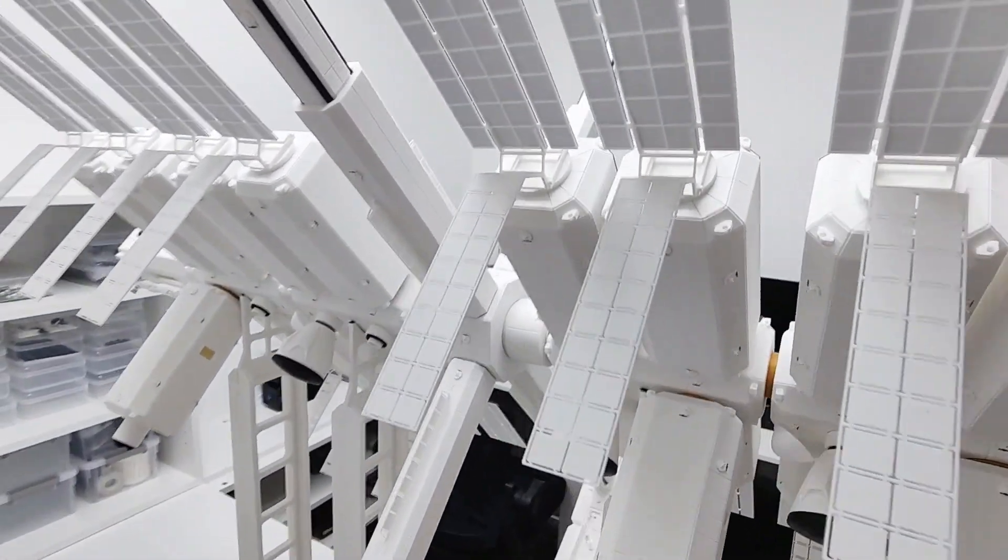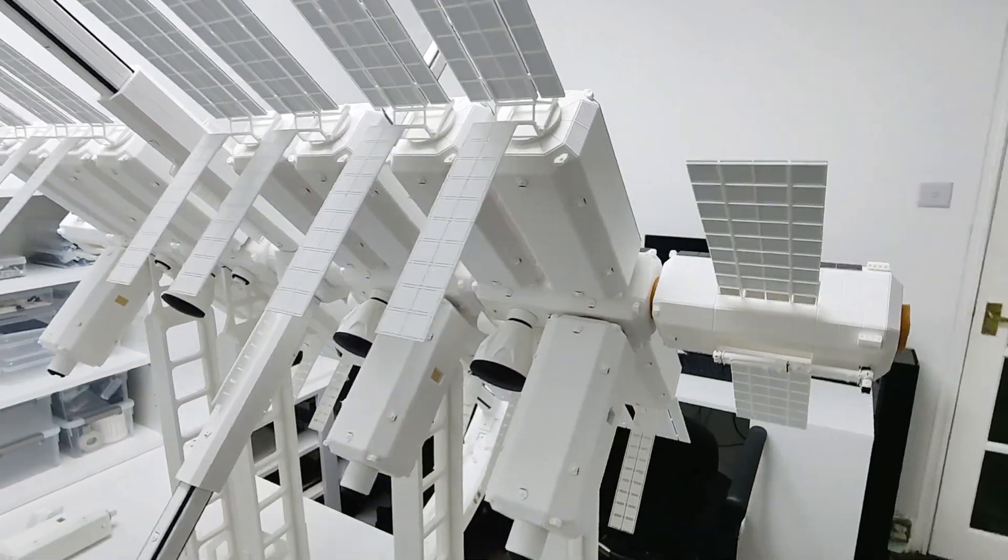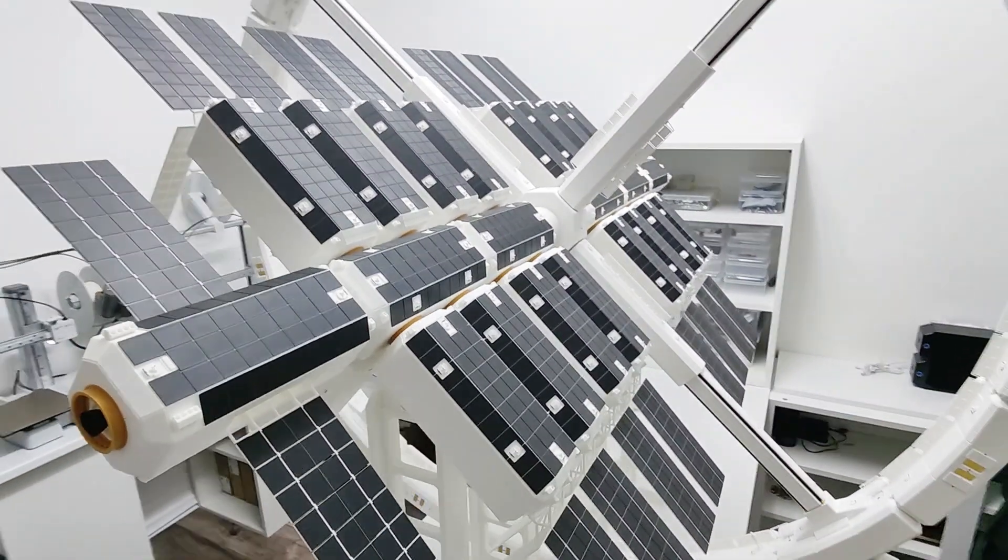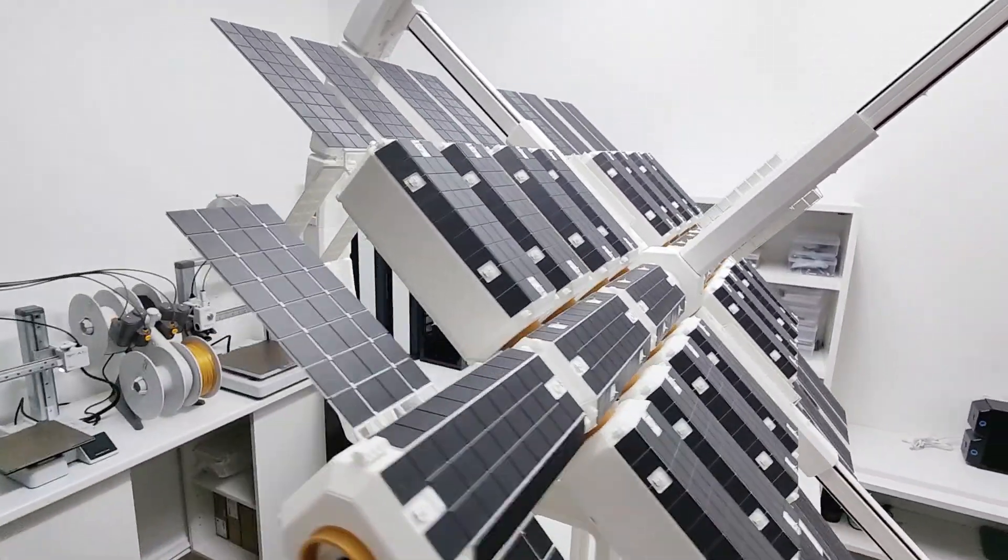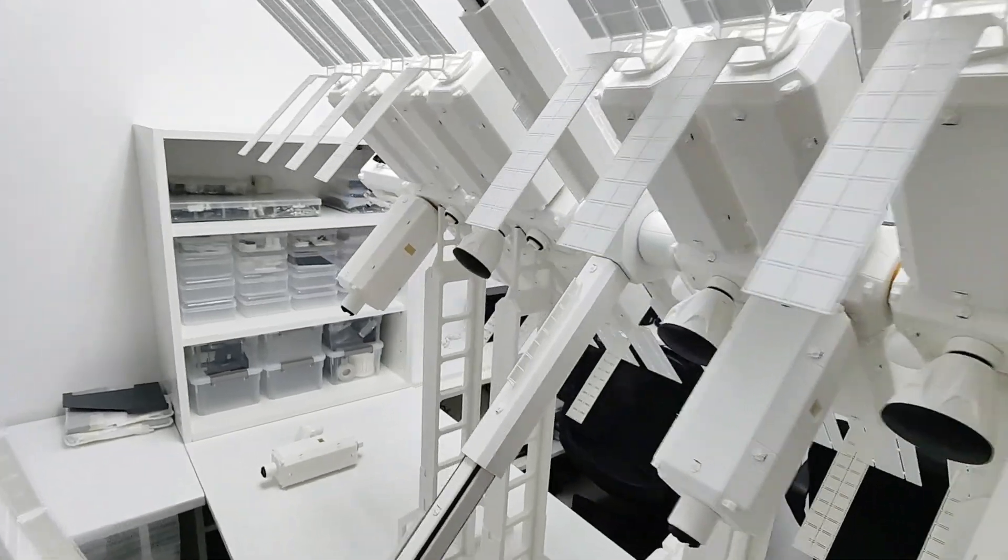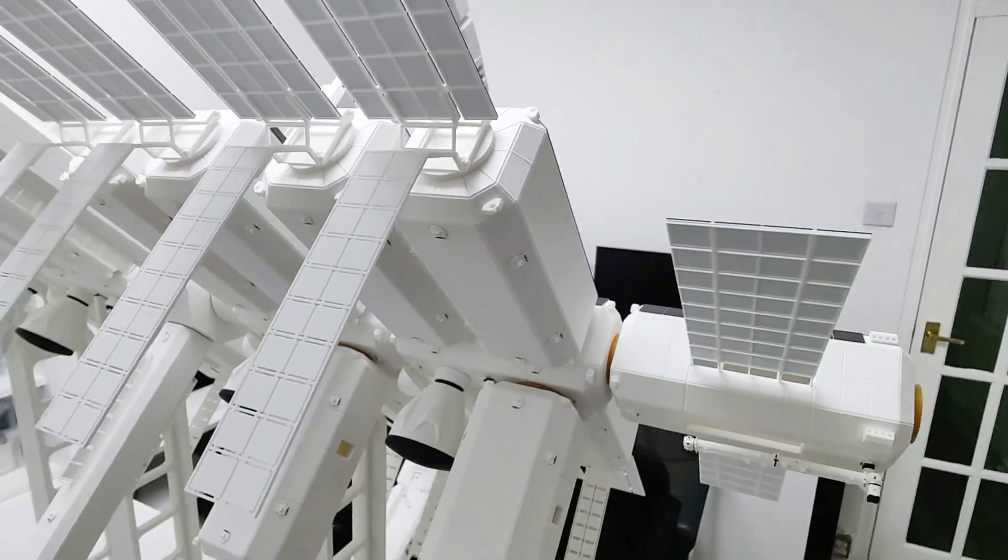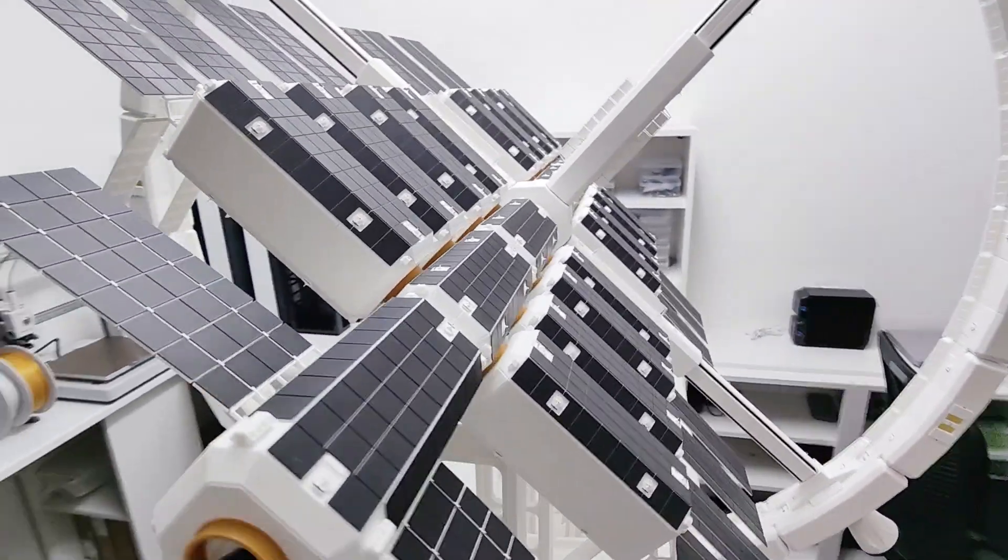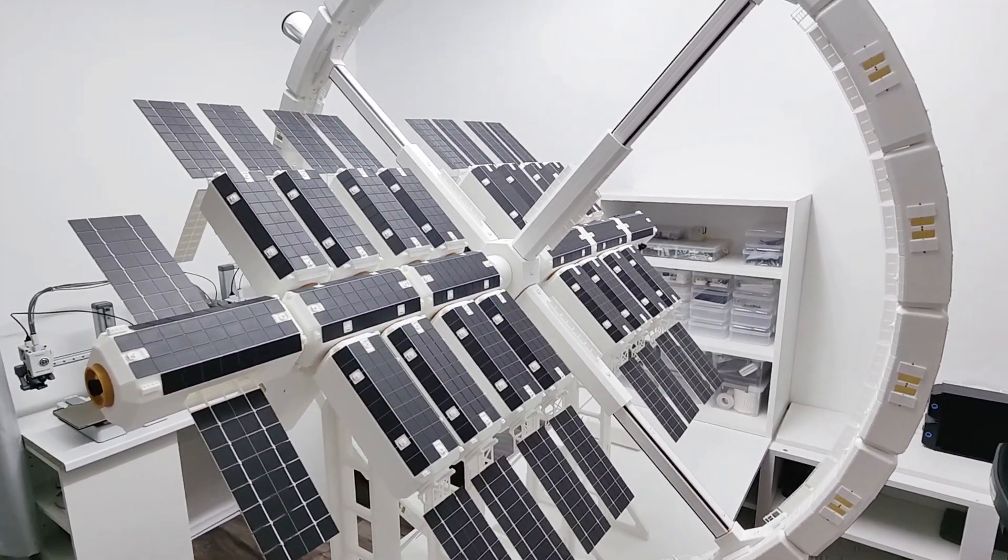And this could also be used for sun pointing and that's because obviously the earth is orbiting the sun. So there is a certain one degree per day procession. So by adjusting the torque ratio in these couplings we can compensate for this one degree per day procession and remain sun pointing.